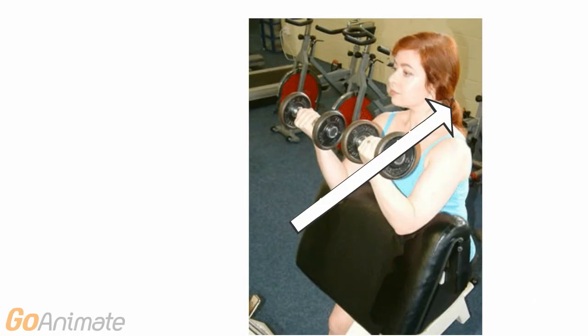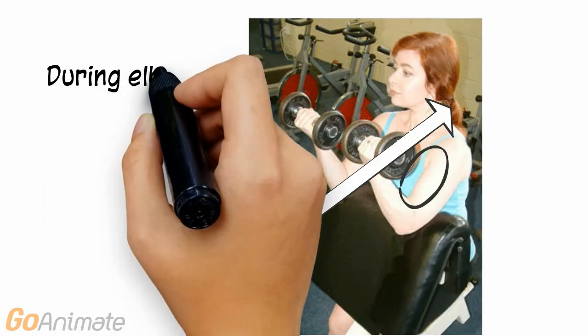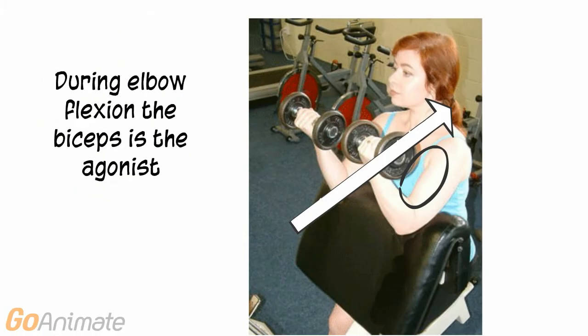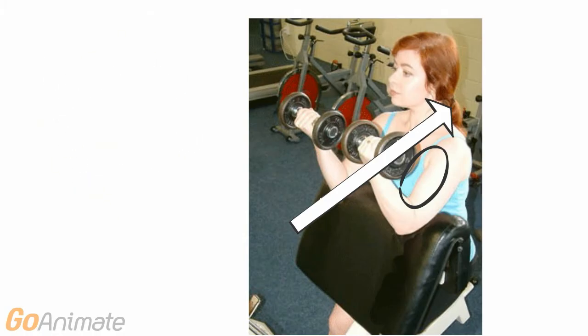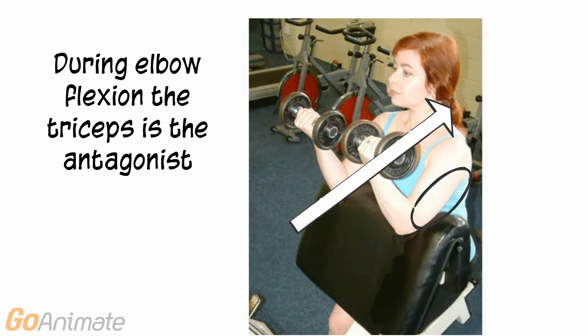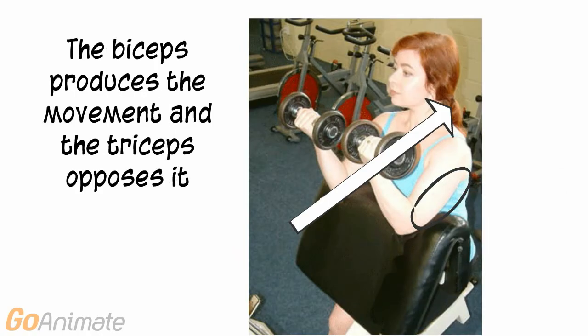Here's an example. In a biceps curl, the elbow flexes to lift the weight. This results from contraction of the biceps muscle. Since the biceps is producing the movement, we say the biceps is the agonist muscle. The muscle opposing elbow flexion is the triceps. We say the triceps is the antagonist in elbow flexion.